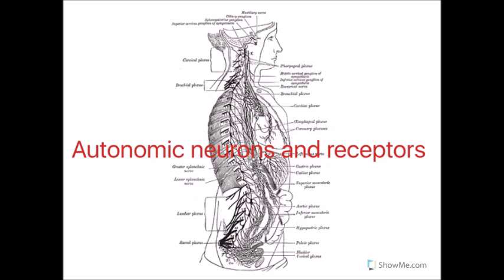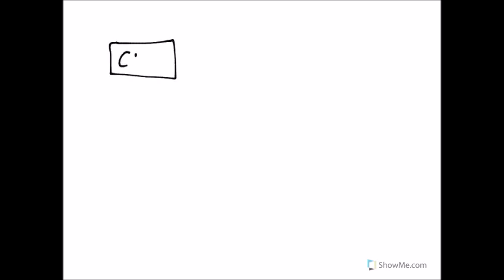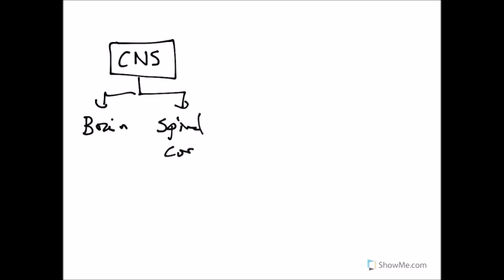We're going to begin with a quick breakdown of our nervous system in general. You have anatomically two divisions. The CNS, the central nervous system, which is composed of two things: the brain and the spinal cord. And anatomically, that's all that is there.